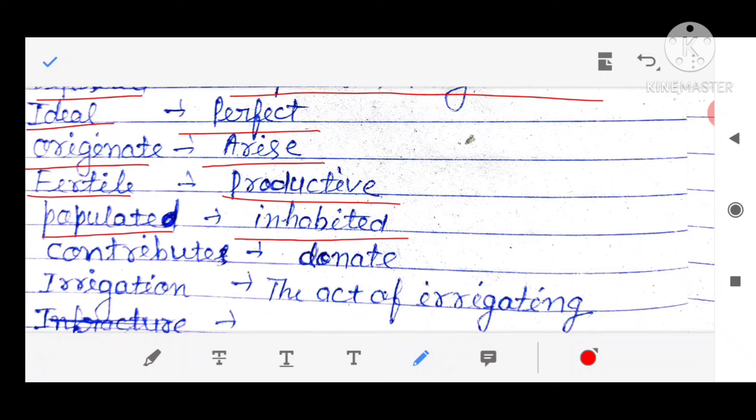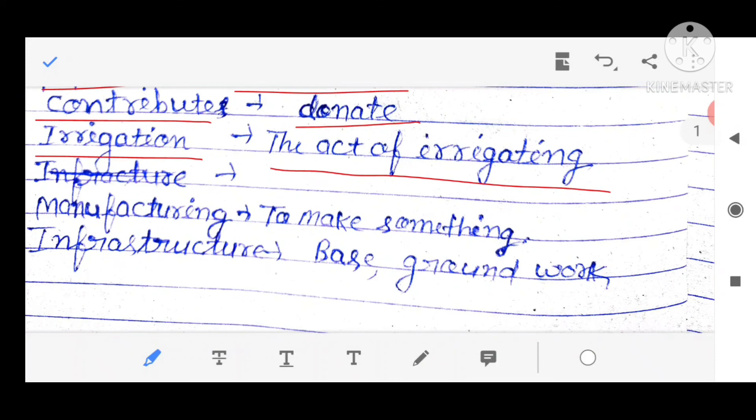Contribute, donate, दान करना. Irrigation, सिंचाई का काम. Manufacturing, to make something, किसी भी चीज का निर्माण करना बड़े स्तर पर उसको बोलते हैं manufacturing. Infrastructure, base ground work.